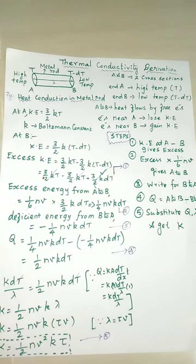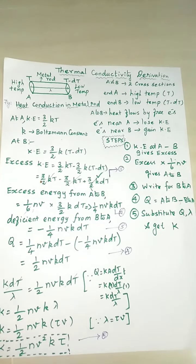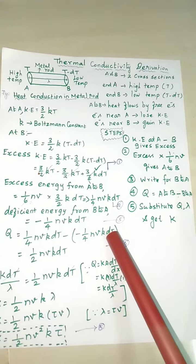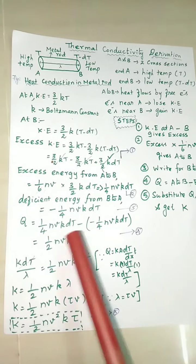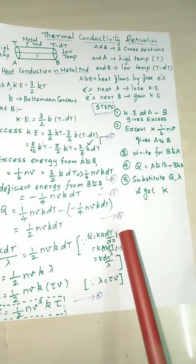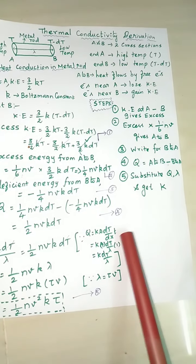Q is amount of heat energy. A to B minus B to A. Q is equal to KA DT by DX into T. Area time is equal to unit value.